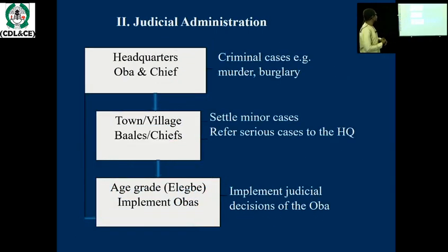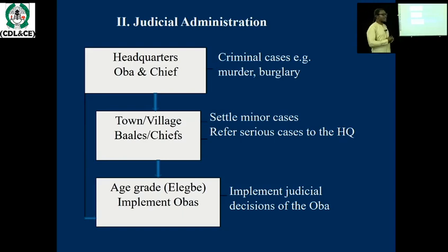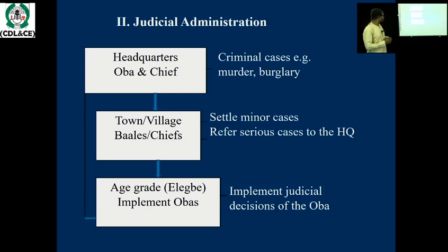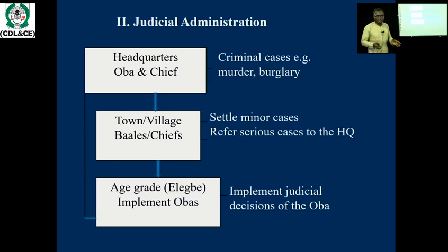The judicial administrative system of the Yoruba is similar to the north. The Oba and his senior chiefs handle criminal cases such as murder and burglary. At towns and villages, the bales and chiefs handle minor cases, while serious cases are referred to the Oba's palace. Another judicial instrument was the age grade — called the Egbe in Yoruba — who implement the judicial decisions of the Oba.